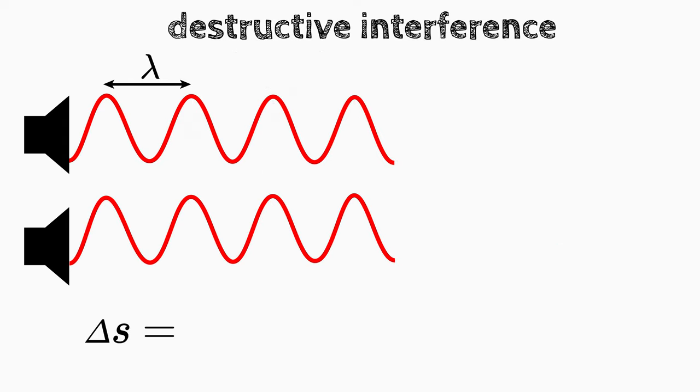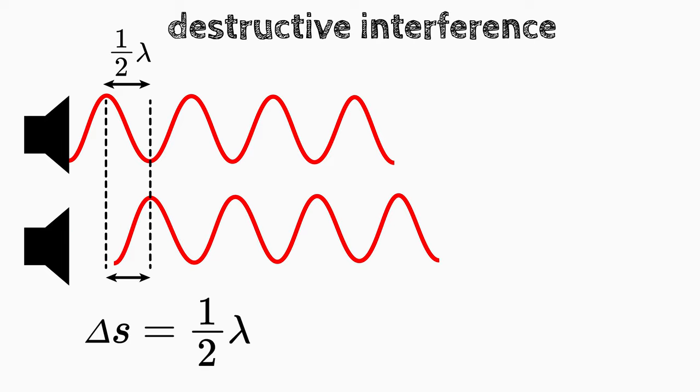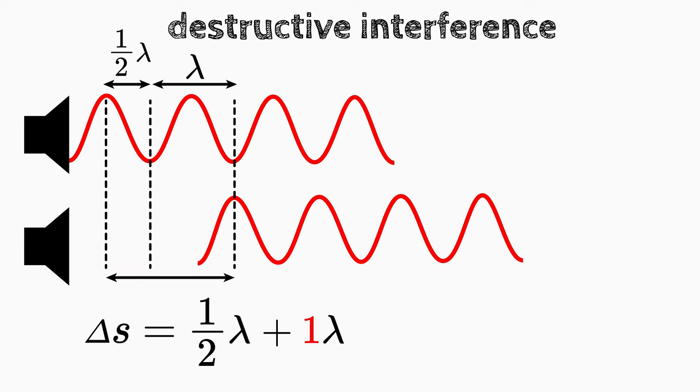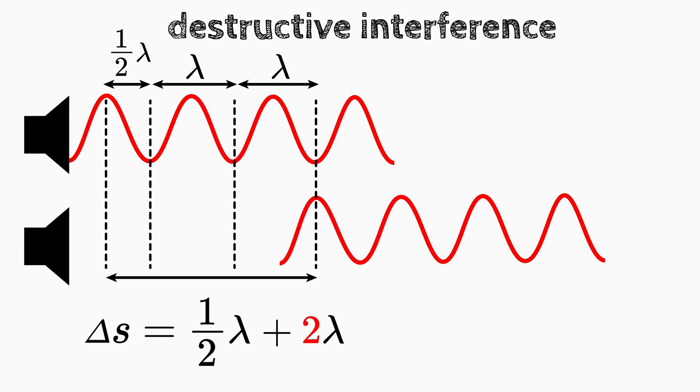For a destructive interference, we shift the wave by half the wavelength and add a multiple of the wavelength. So the path difference is now 1 half plus m times lambda.